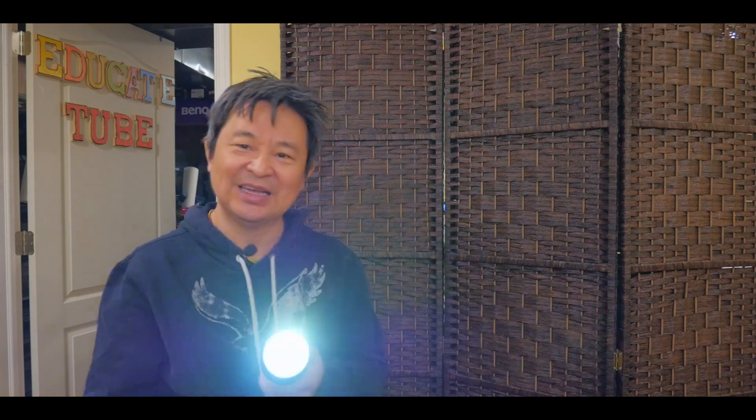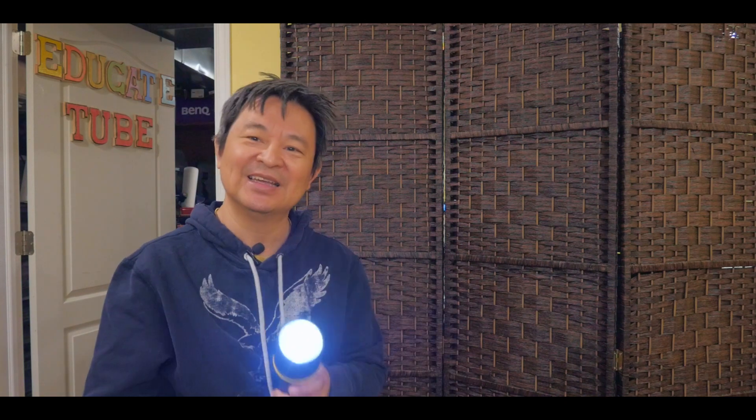Alright, so here we have an AA converted into D type battery. So we convert the AA into a D type battery. And there we go. It's pretty bright again. Amazing.